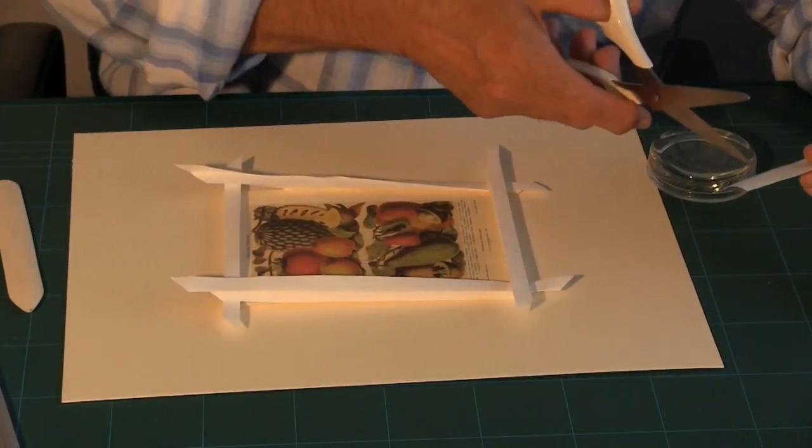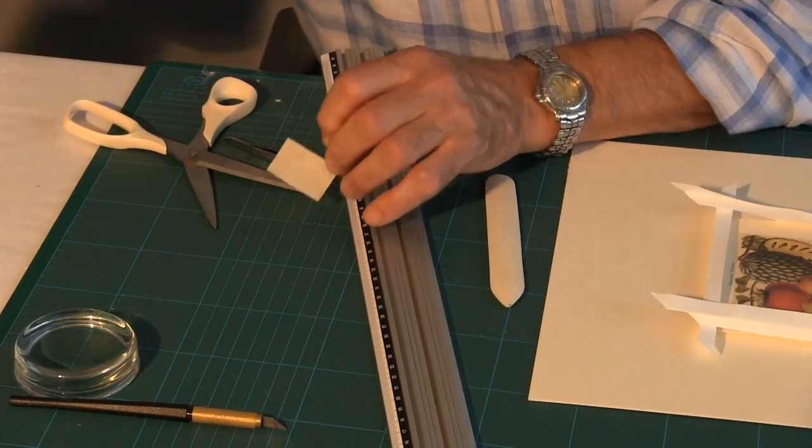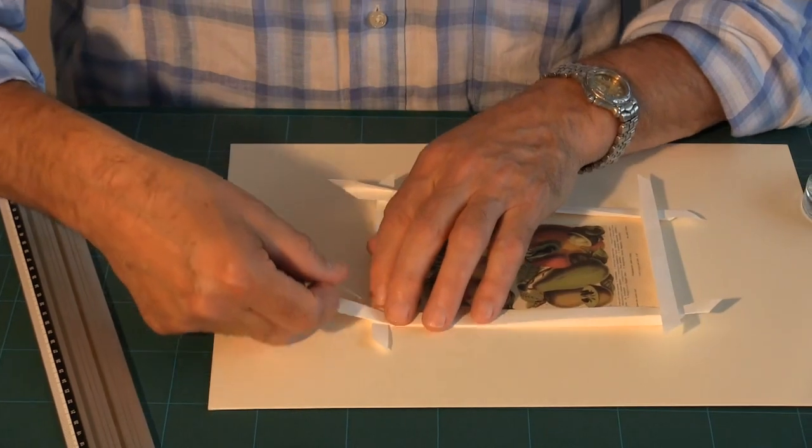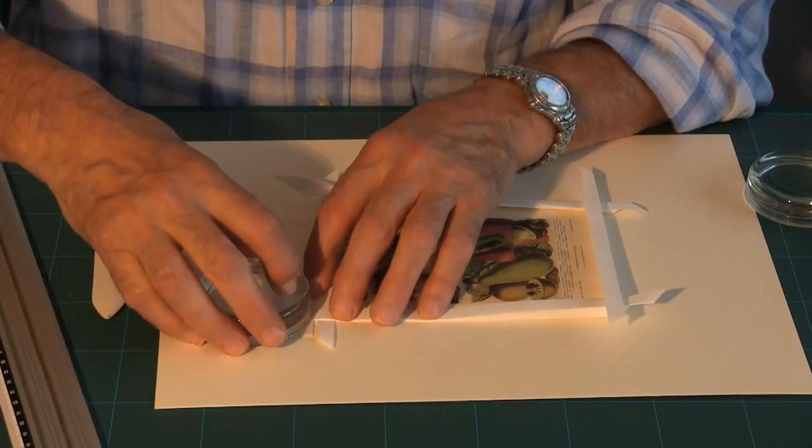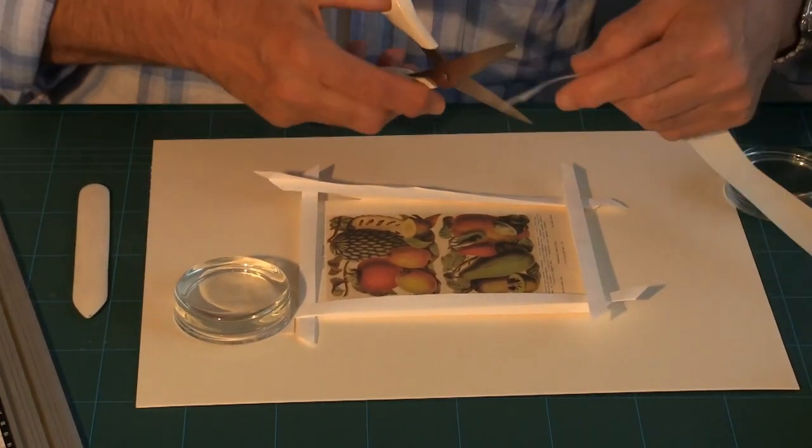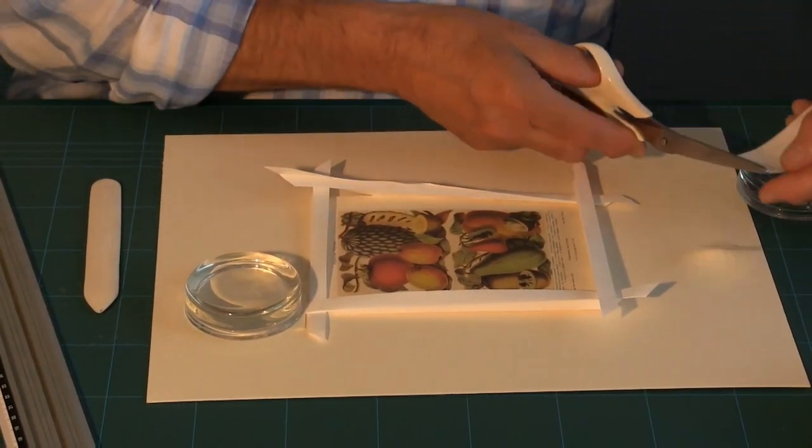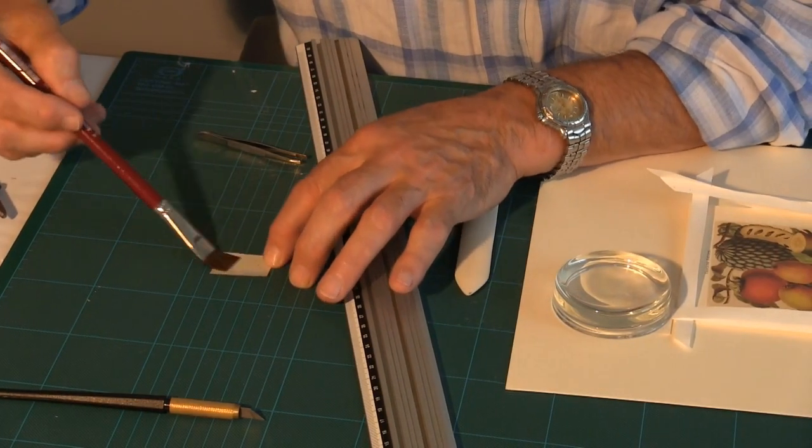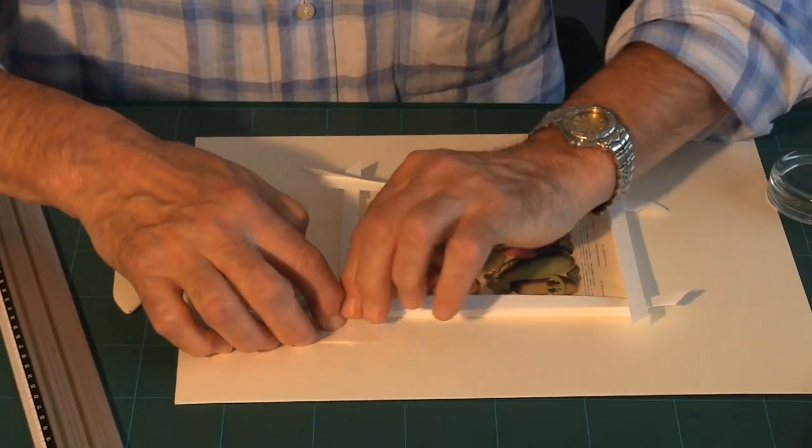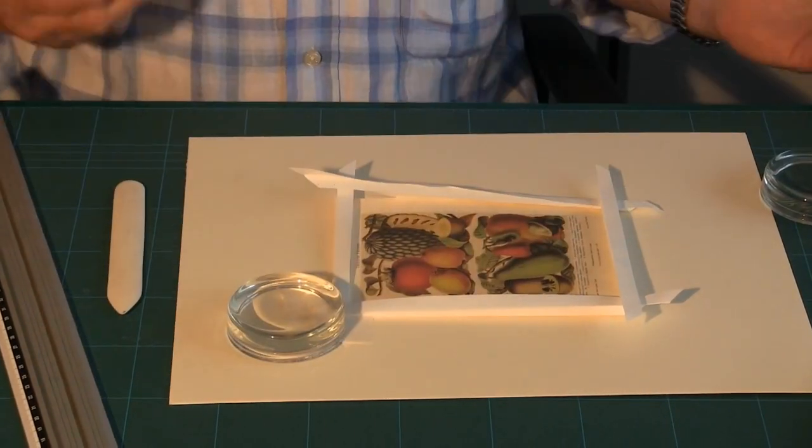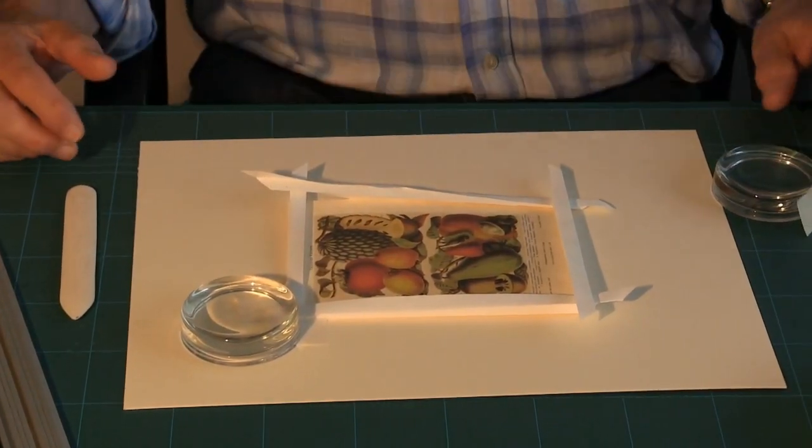And then I'm going to take strip to fasten the corners down. One. That's two. And I do that until all four corners are finished.